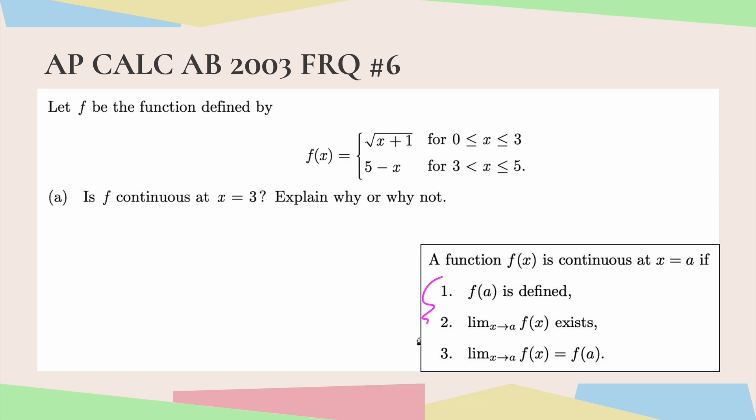These are the three requirements for continuity. First, f(a) must be defined. Second, the overall limit must exist, which means the limit from the right must equal the limit from the left. That's super important. And third, that both of those numbers are the same, that those equal each other.